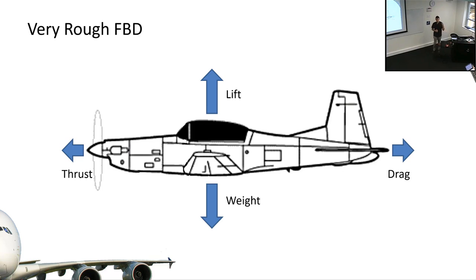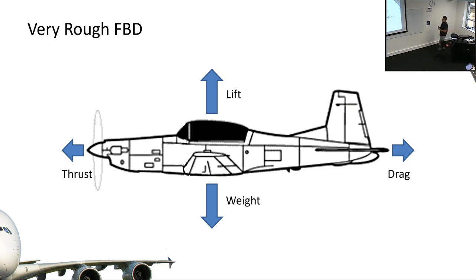We have a lift force which you should all be familiar with. We'll talk about the interaction between lift and weight a lot in this course. Thrust and drag are equal and opposite in straight level flight, as are lift and weight. Thrust and drag are not really covered in this course - that's flight mechanics and propulsion. In terms of structures, lift and weight have a much bigger impact on structural design than thrust and drag do.